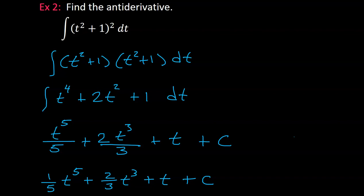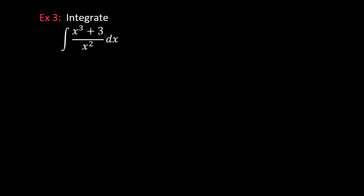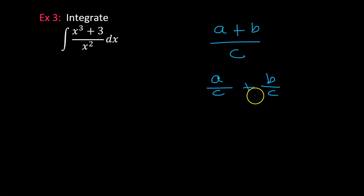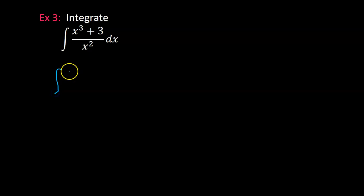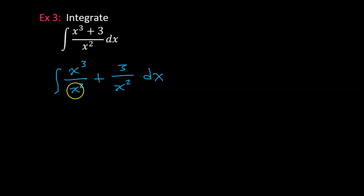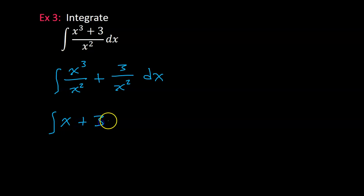It's common to write this as a standard form polynomial with fractional coefficients in the front. For Example 3, remember that (a + b) over c is the same thing as a/c plus b/c. So this will be the integral of x cubed over x squared plus 3 over x squared. When you divide with variables, you subtract the exponents — 3 minus 2 is 1, so we get x to the first power, and then 3x to the negative 2 power dx.